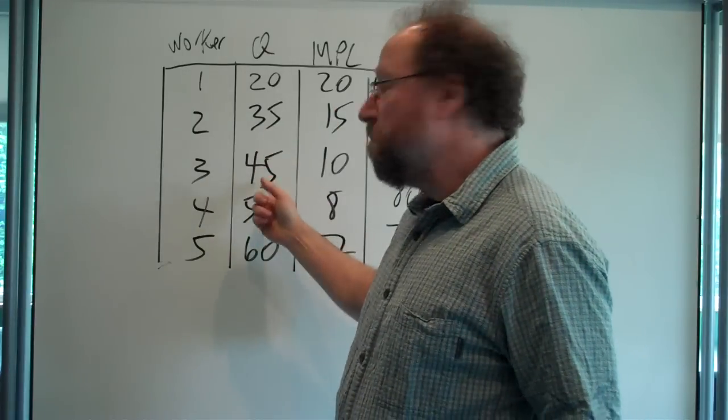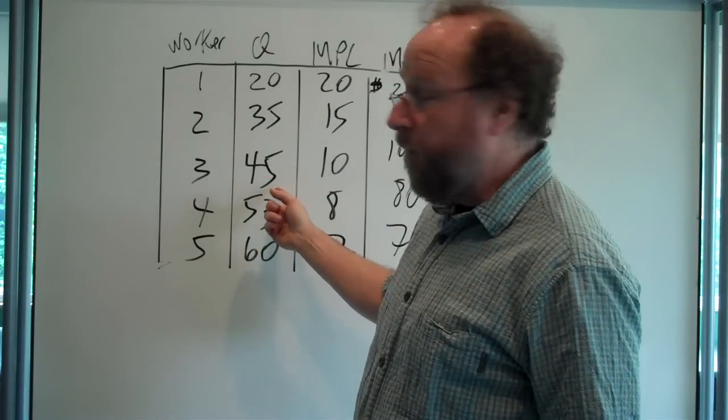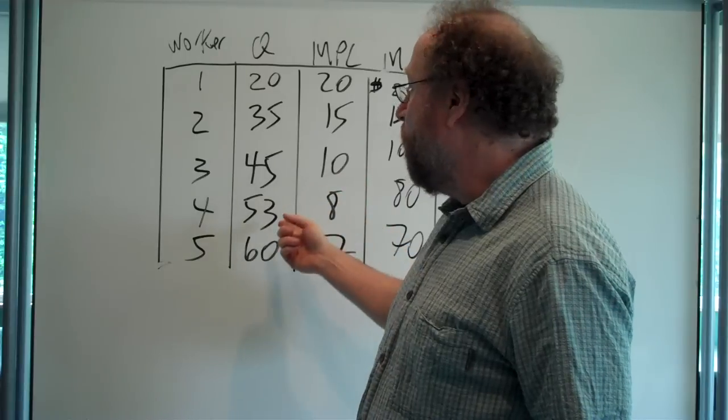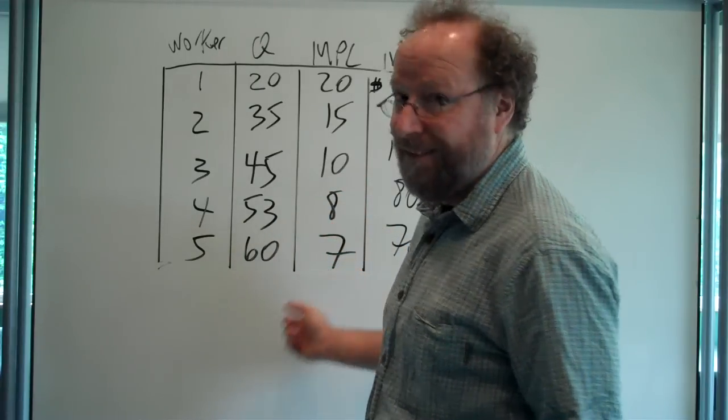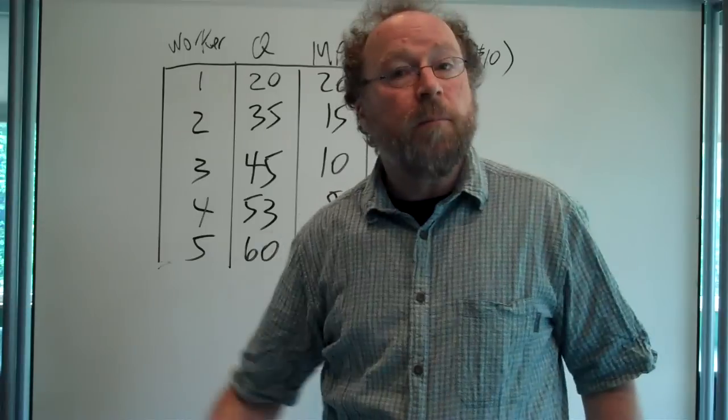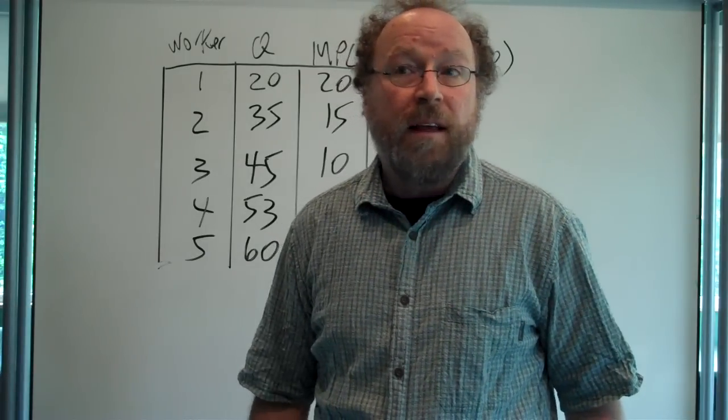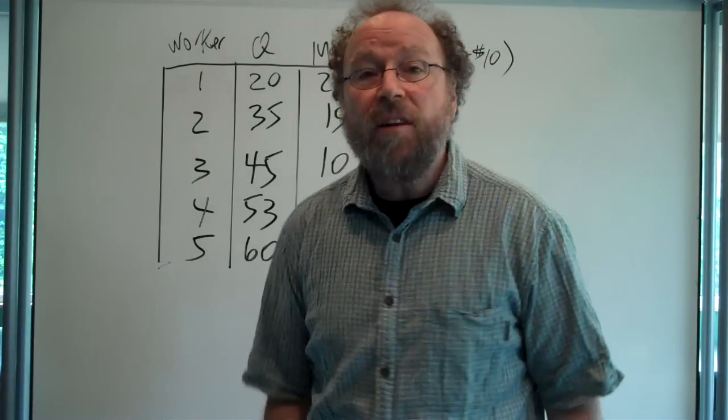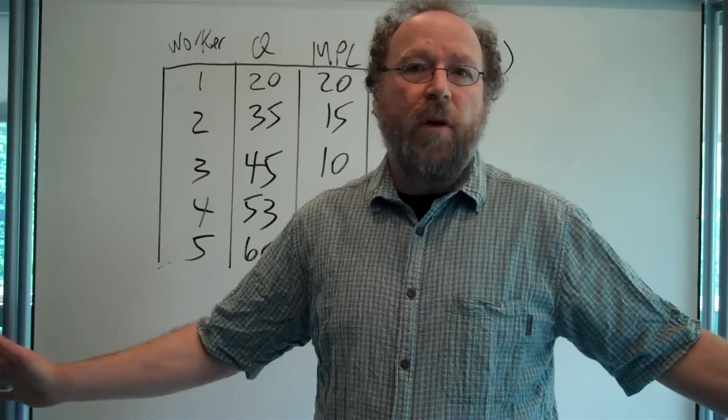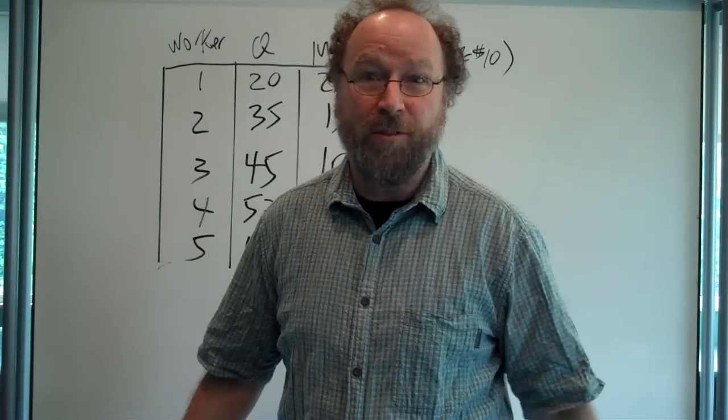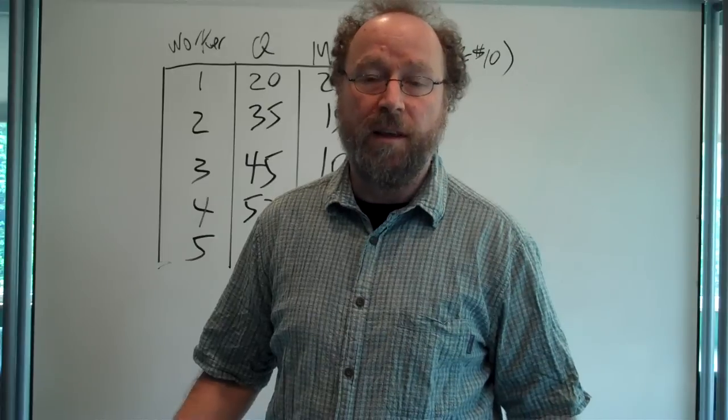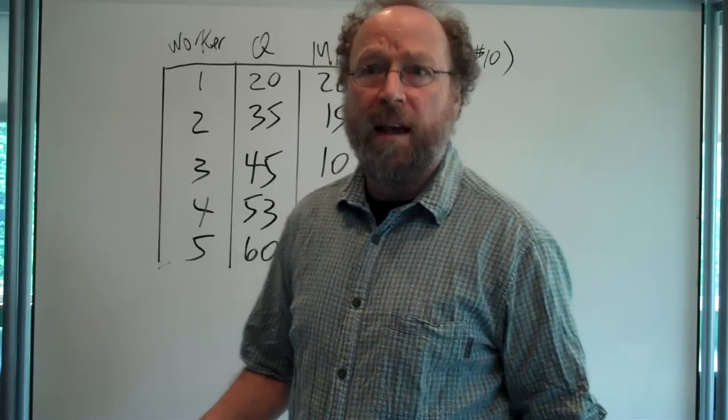Third worker, it's a little harder. Total output goes up to 45—10 quarts. Fourth worker only adds 8 quarts. Fifth worker only adds 7. We could keep going, and you see where this is heading. At maybe worker number 10 or something, no extra output. You've completely maxed out how much you can produce by adding workers to the existing amount of land.